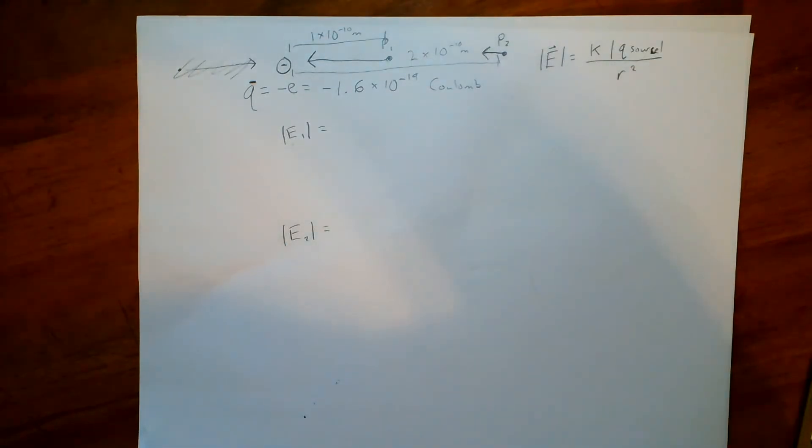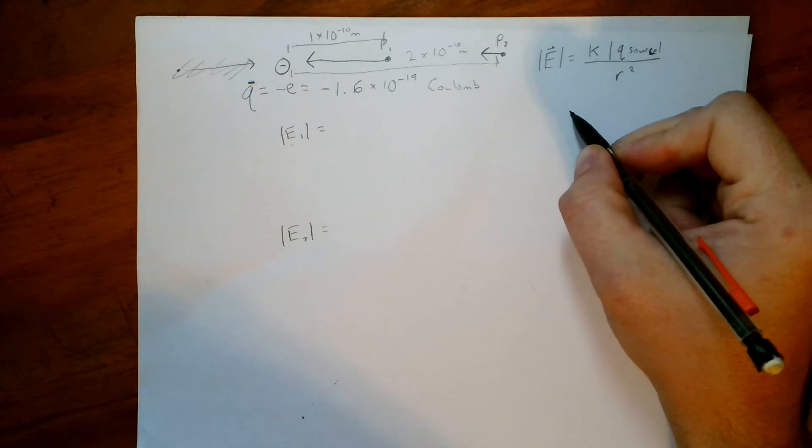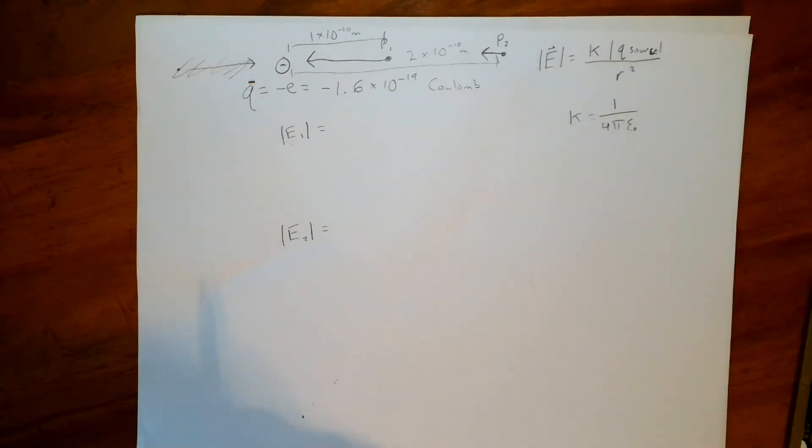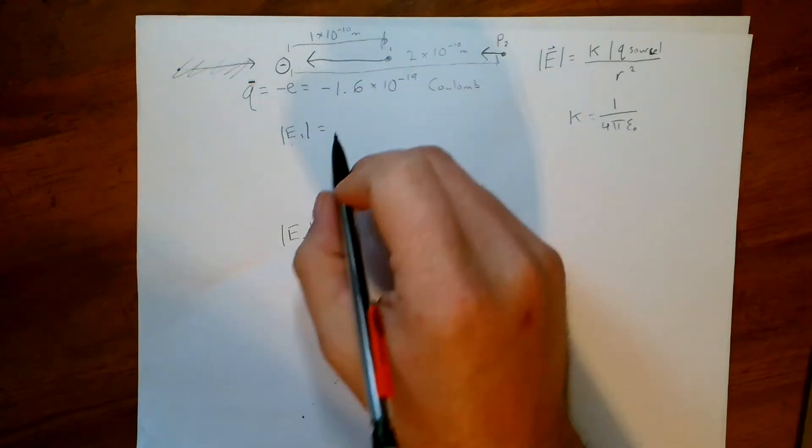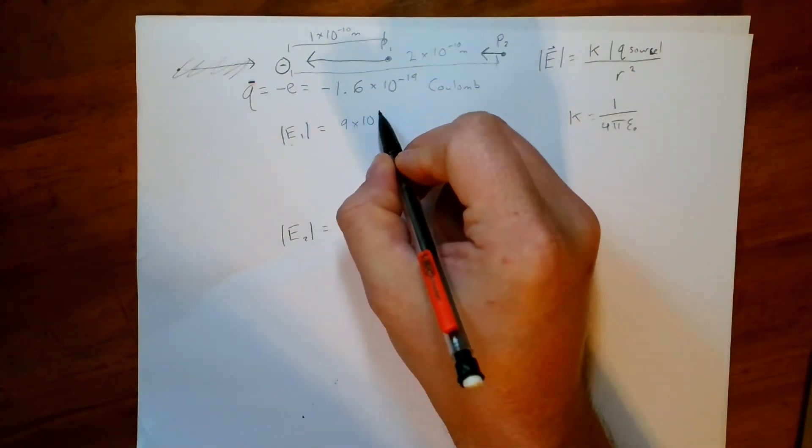So, Coulomb's constant, which remember this k here is equivalent to one over four pi epsilon naught. You're welcome to use that as well. That's what the AP class, AP uses this formula right here. And that k is equivalent to nine times ten to the ninth power.